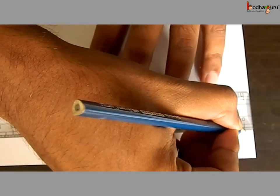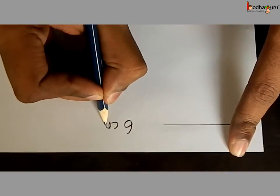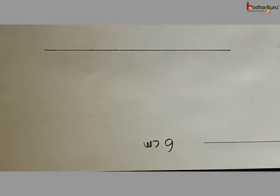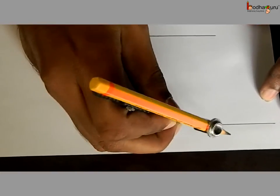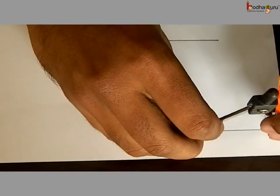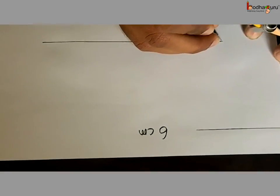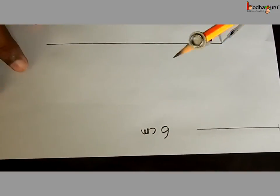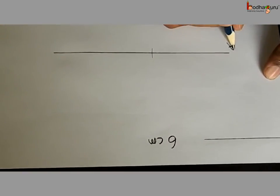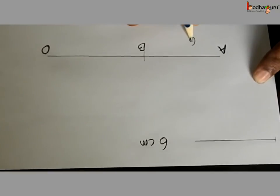Now we draw a line segment of the given length, 6 cm, with the ruler. We draw a line segment longer than 6 cm. Take a compass with a sharp pencil attached. Measure 6 cm with the compass — put the needle on one end of the line segment and open it until the pencil tip reaches the other end. Then put the needle on one end of the ray and cut off a 6 cm segment. The ray was AO and we mark the cut at point B, so AB is 6 cm.